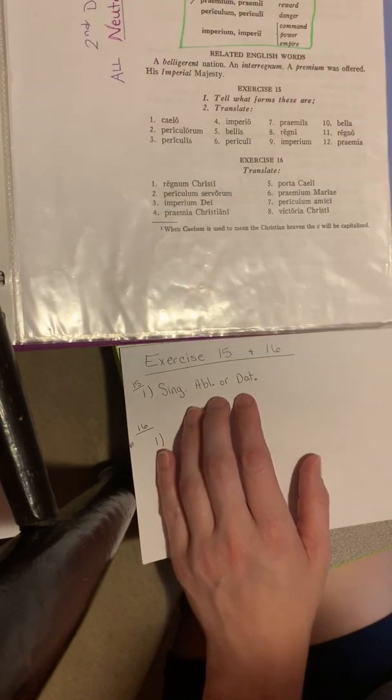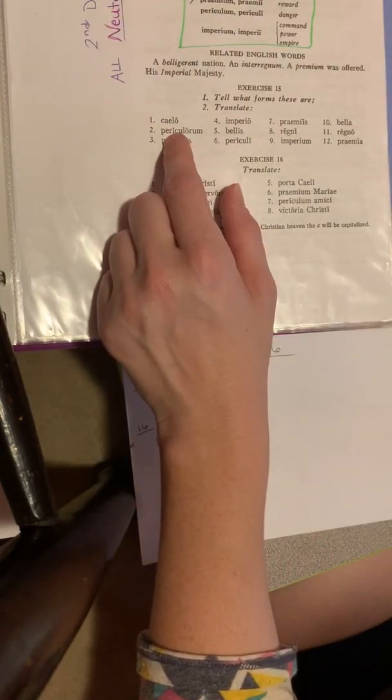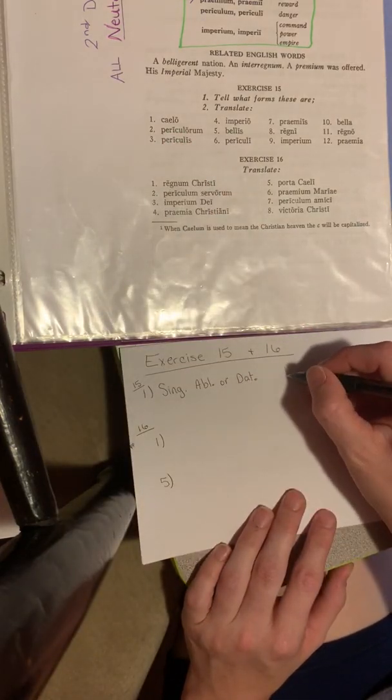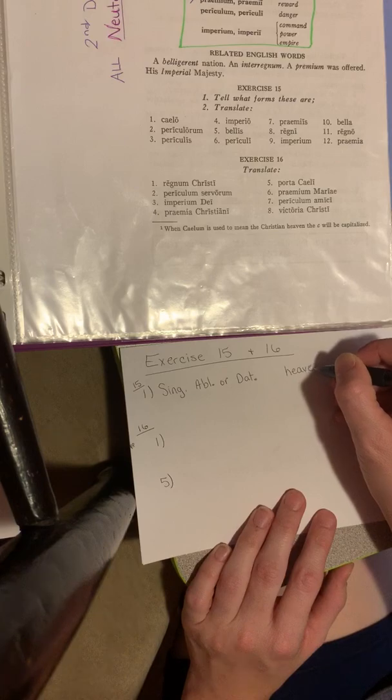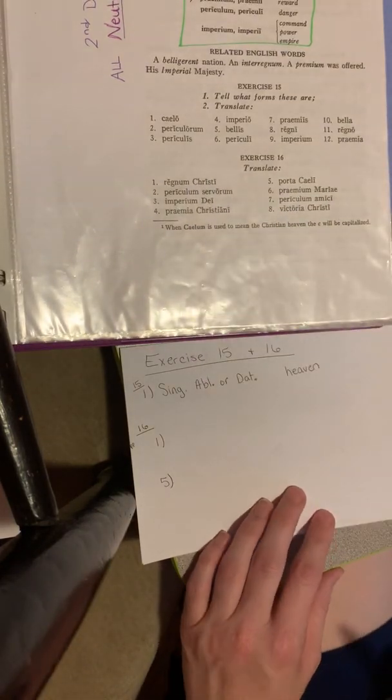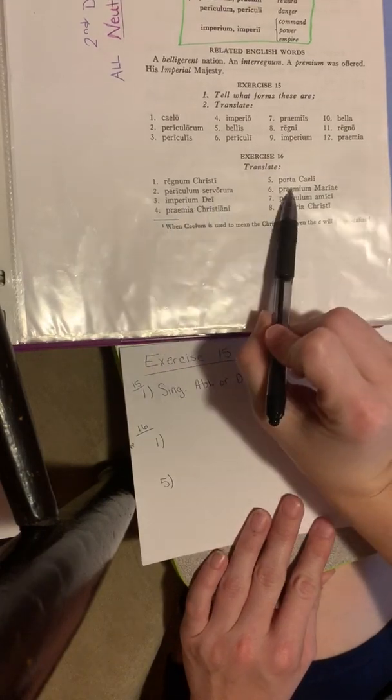And then of course, what does Celo mean? It means heaven. And just do that with all the words. Now 16. We're going to do one and five.